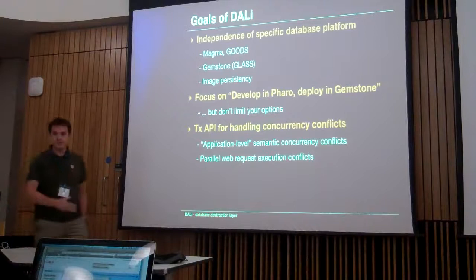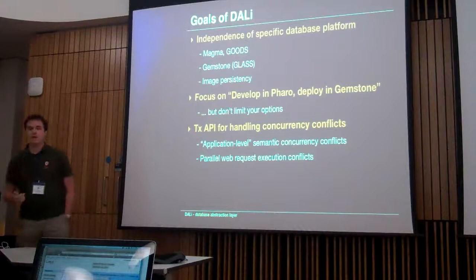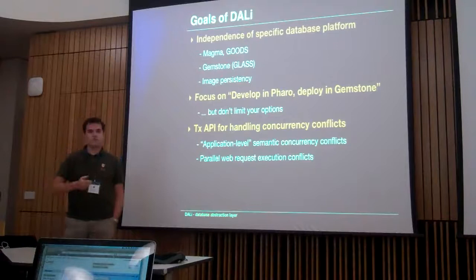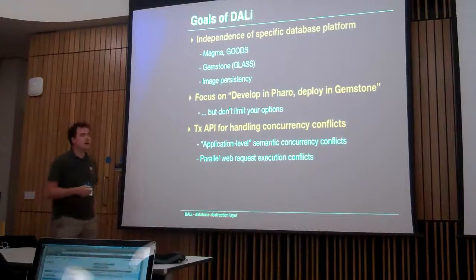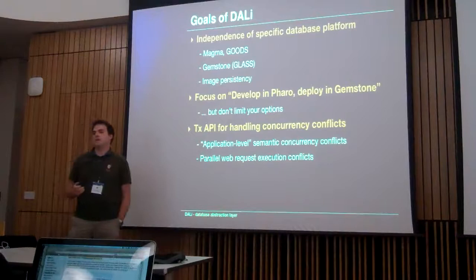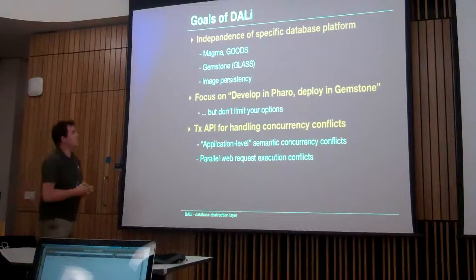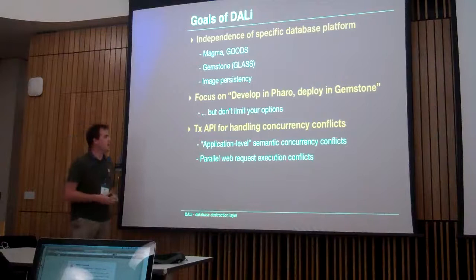So what were the goals of DALI? These are also the things we are actually doing with it. The first part was an independent layer of the application towards the database. We started working with Magma as a database, we also worked with Goods, we had the image for image persistency, and we finally moved on to GemStone Glass. The entire application didn't change a bit — everything that changed was inside the database abstraction layer. So that was the primary motivation for developing this abstraction layer.